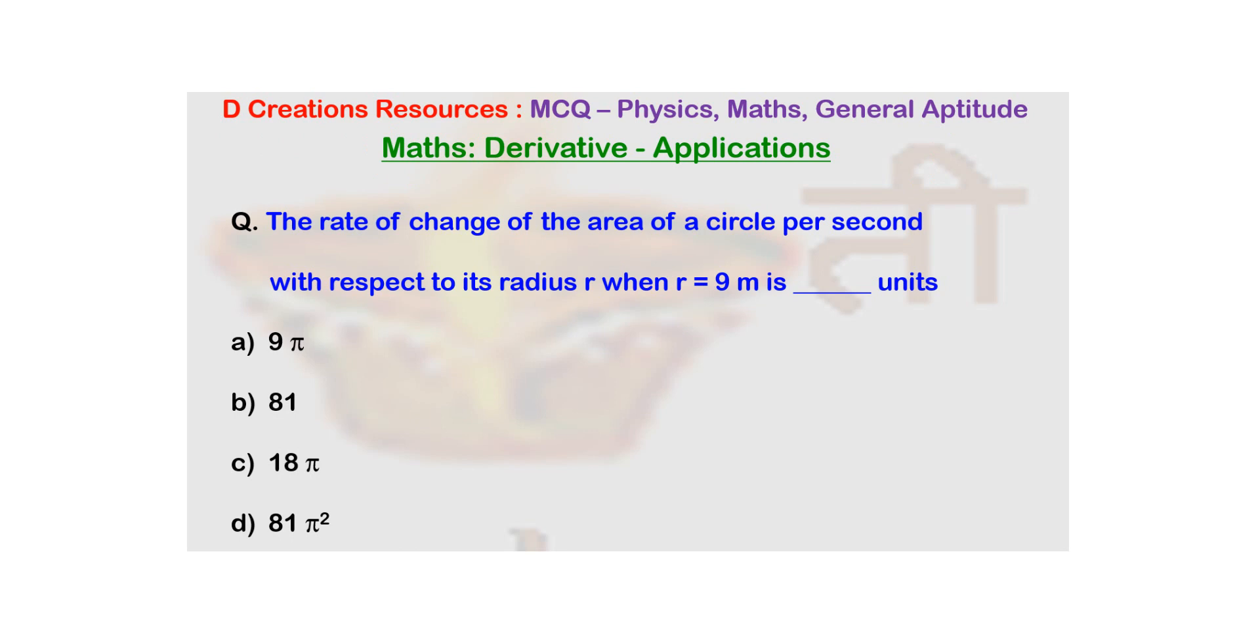Typically many times people ask what is the use of learning these concepts in calculus. You will see the real life use of these concepts here. The question is: the rate of change of the area of a circle per second with respect to its radius r when r is equal to 9 meter is blank units.